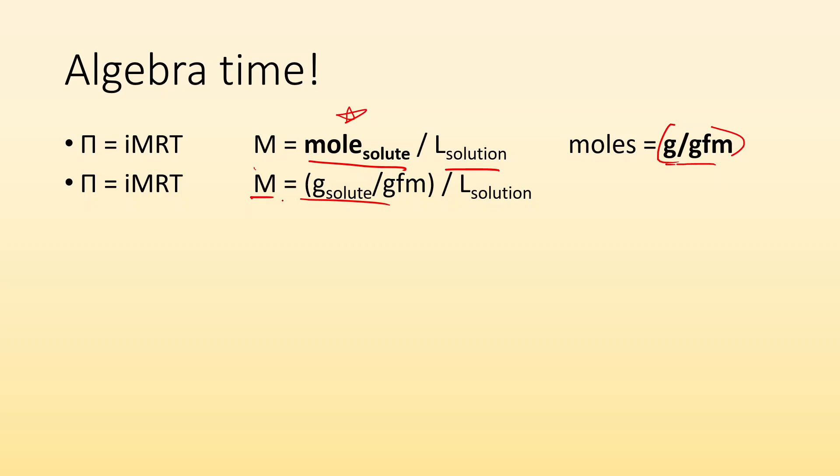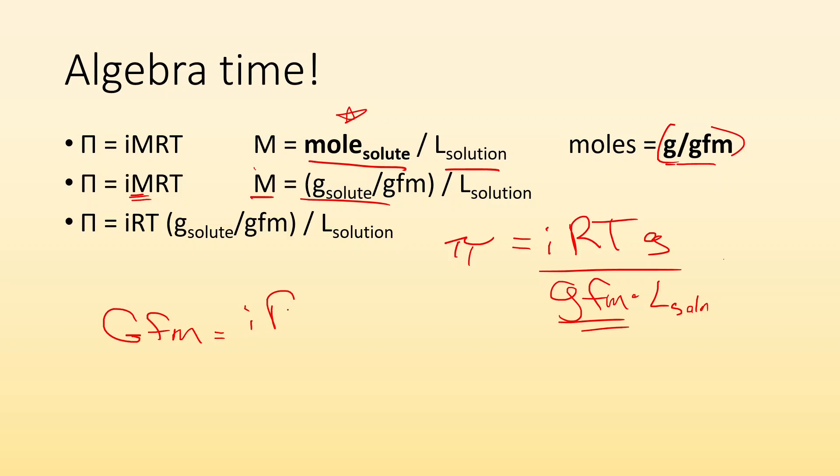Now, I can plug that all in to the molarity in my equation. I get this ugly looking equation. But again, I can rewrite it. The osmotic pressure has to equal IRT times grams divided by the GFM times liters of solution. Now, I just rearrange. Times each side by GFM divided by pi, and I end up with the gram formula mass is going to equal IRT G divided by pi liters of solution.